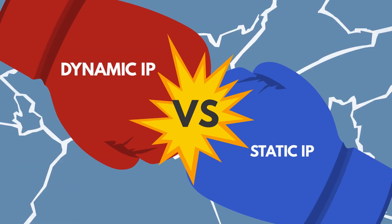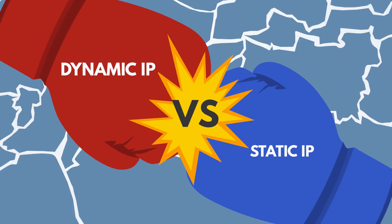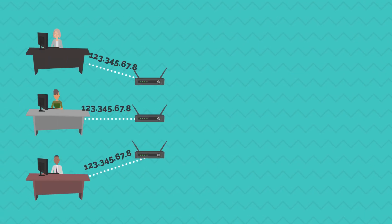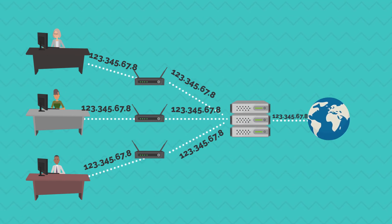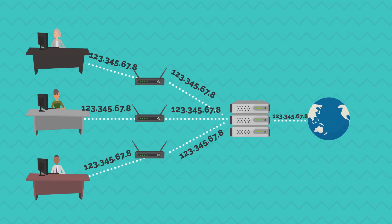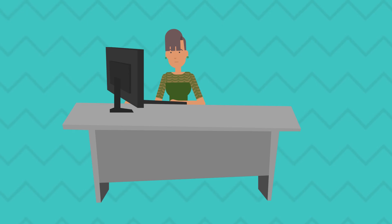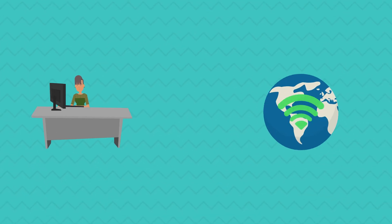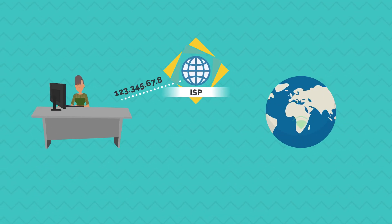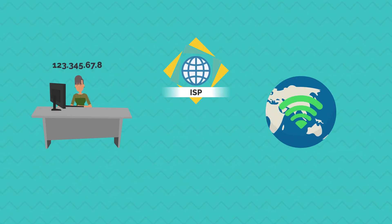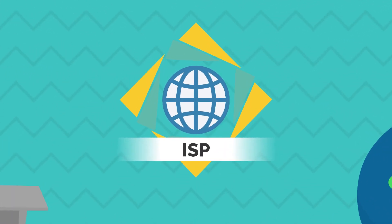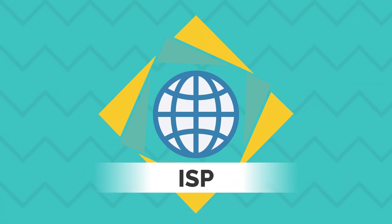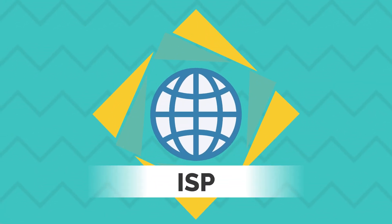Dynamic IP versus Static IP. All devices on a network communicate in numbers called IP, also known as Internet Protocol. Before you connect to the Internet, your network provider will need to assign you an IP. Most commonly, our Internet provider is the network that assigns us an IP automatically to access the Internet.